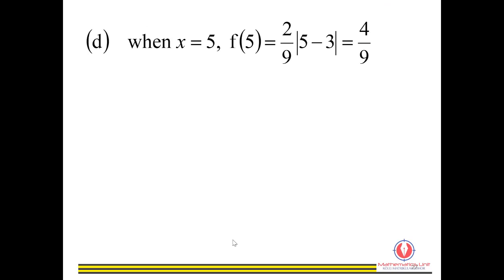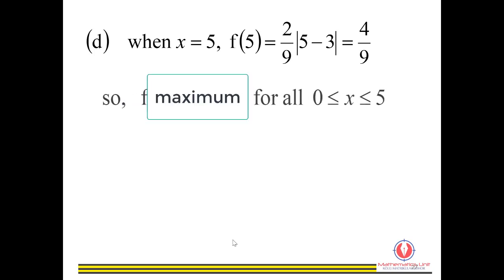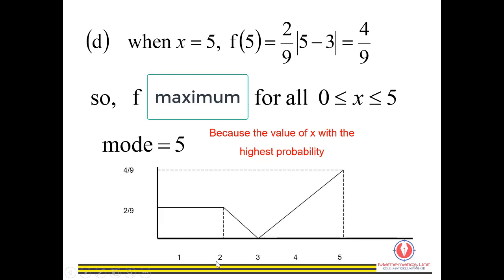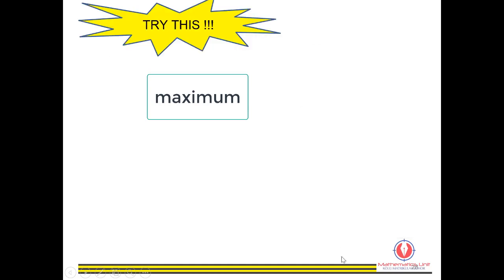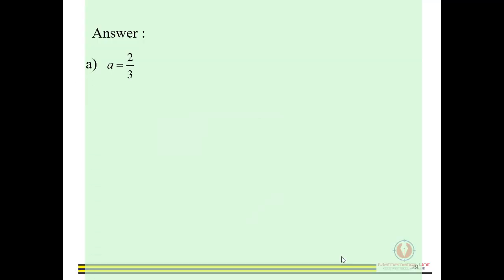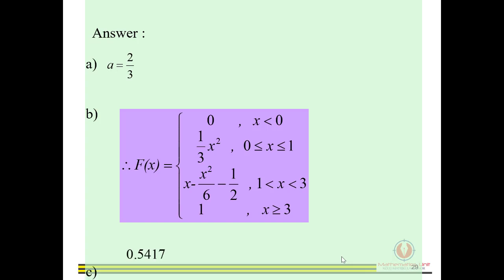Finally, we find the mode. By substituting x equals 2, 3, and 5 and looking at the graph, x equals 5 gives us the highest probability. Therefore, the mode is 5. This completes the exercise — thank you.